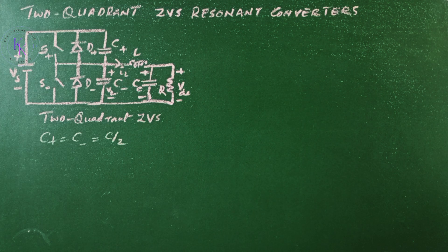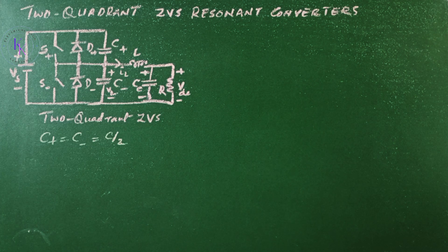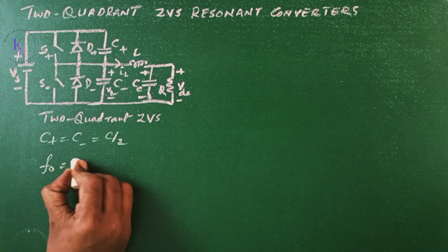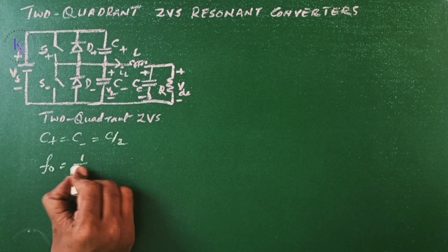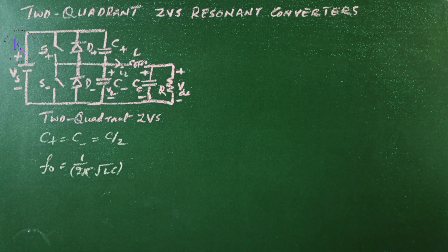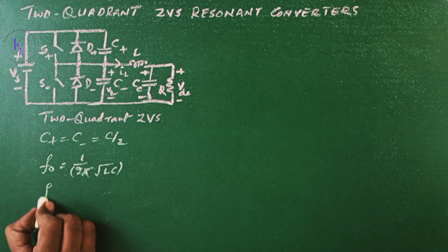The inductor L has such a value so that it forms a resonant circuit. The resonant frequency F0 equals 1 by 2 pi square root of LC and it is much larger than the switching frequency Fs.